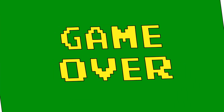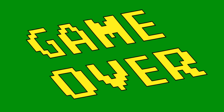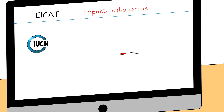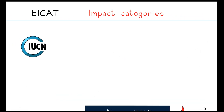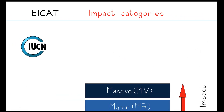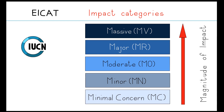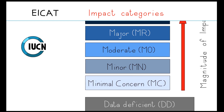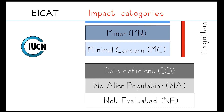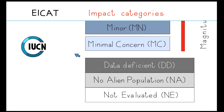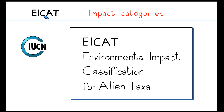Unfortunately, this is not a game. A system has been developed by IUCN to classify alien species according to their impact on biodiversity. This system is called EICAT, which stands for Environmental Impact Classification for Alien Taxa.